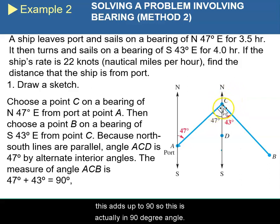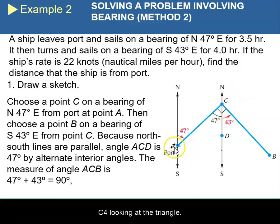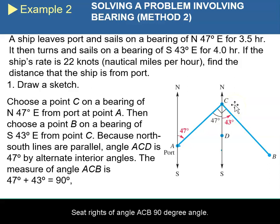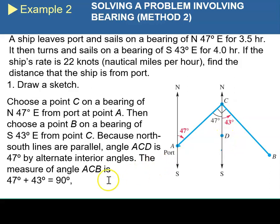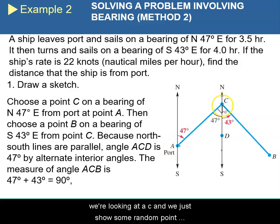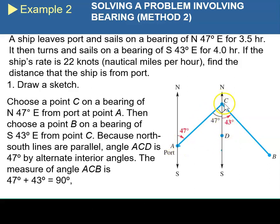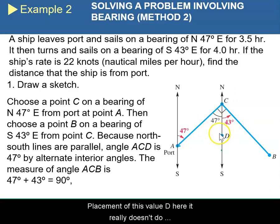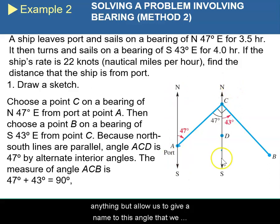Adding these together — 47 and 43 — it's very clear that this adds up to 90. So this is actually a 90-degree angle at C. If we're looking at triangle A-B-C, angle A-C-B is a 90-degree angle. Now this value D here is really just given to us so that we can create an angle measure for 47 degrees. We chose some random point on this line called D so that we can say this angle formed here is 47. Don't get too caught up with the placement of D — it just allows us to name the angle found from the transversal lines.